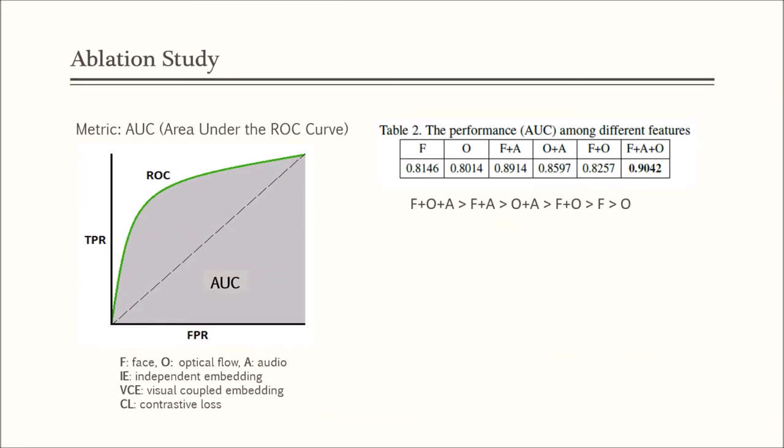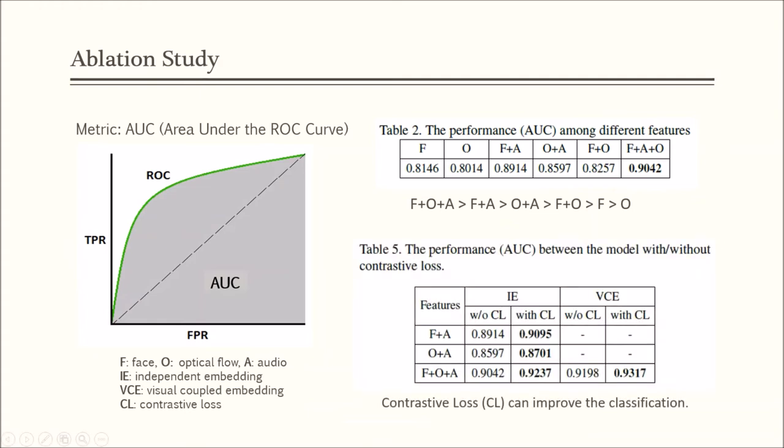Table 2 shows the performance of different features in the independent embedding network without contrastive loss. The trend demonstrates that the optical flow can provide an additional and important clue for detection. Second, we evaluate the influence of contrastive loss. It shows that the contrastive loss can improve the prediction accuracy around 1% to 2%,